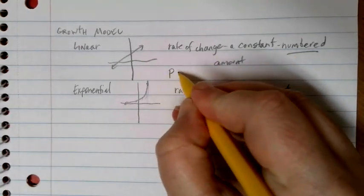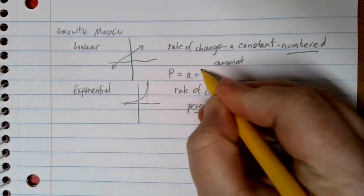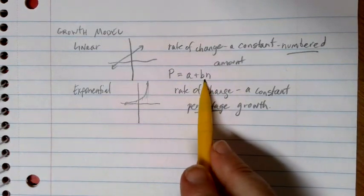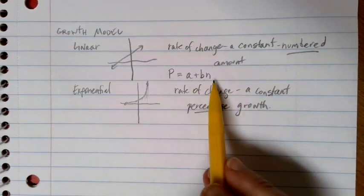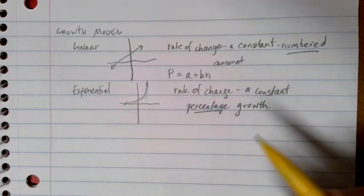Now, for our linear equations, there was a general formula that we could use, and it was P equals A plus B times N, where A was our starting value and B was our rate of change. N was how we were measuring things, and P was whatever it was we were measuring.